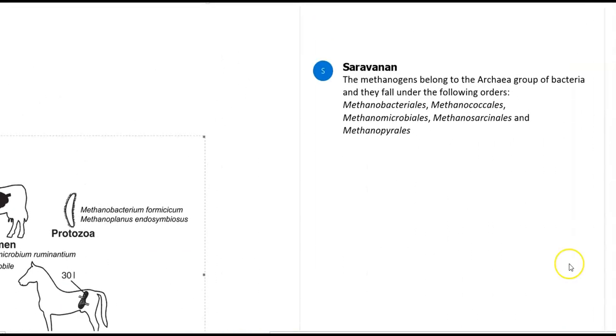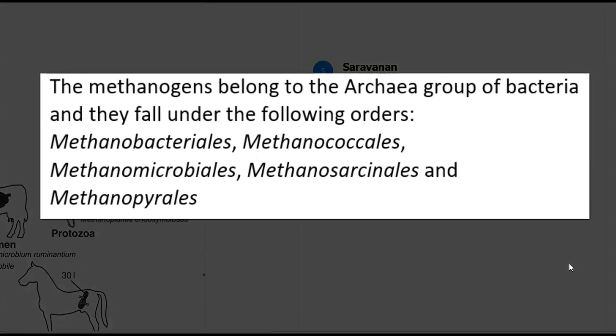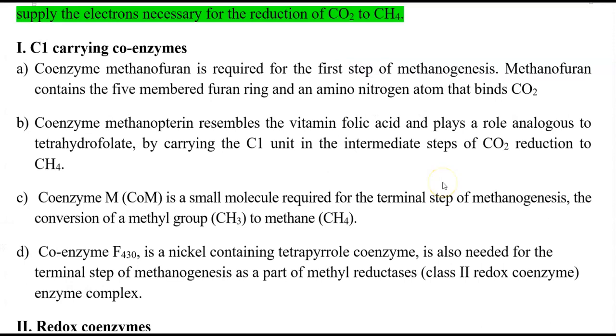Methanogens belonging to the group of archaea fall into the following orders: Methanobacteriales, Methanococcales, Methanomicrobiales, Methanosarcinales, and Methanopyrales. Now we look at the coenzymes involved in the reduction of carbon dioxide into methane.